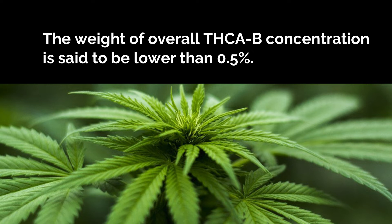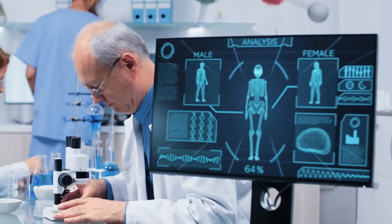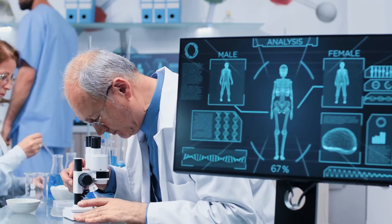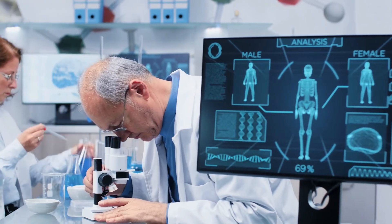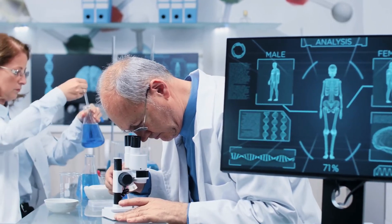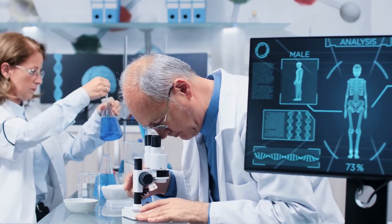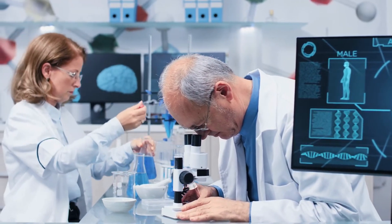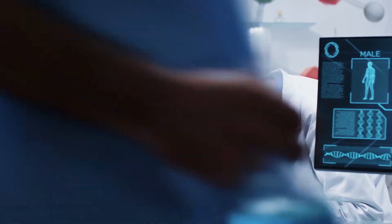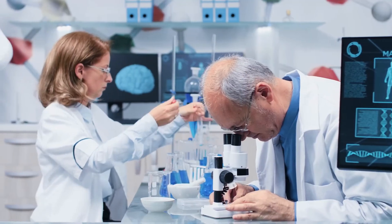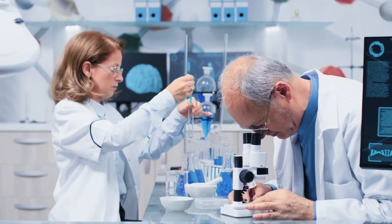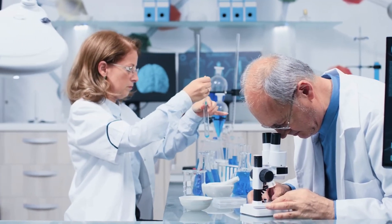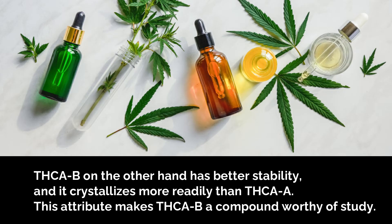The weight of overall THCAB concentration is said to be lower than 0.5 percent. Research has made it known that THCAA is first synthesized by the cannabis plant. As a matter of fact, the isomer is the major reason for many of the pharmacological studies.